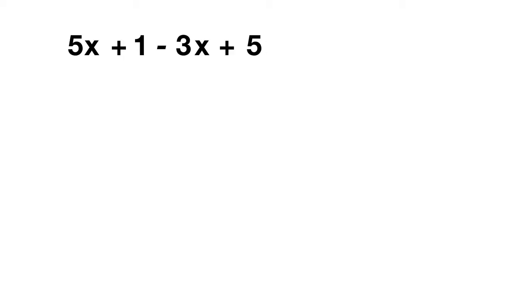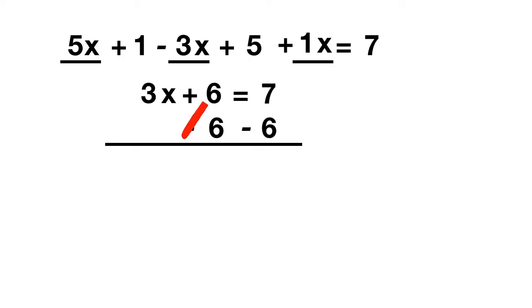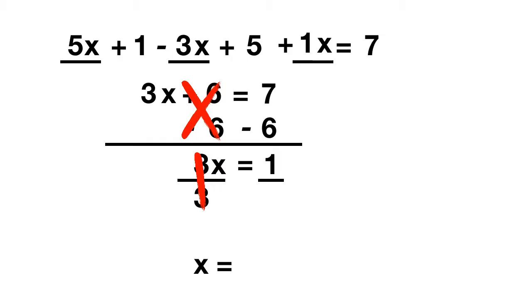Here's the last equation: 5x plus 1 minus 3x plus 5 plus 1x equals 7. Combine the x terms: 5x minus 3x plus 1x. 5 minus 3 is 2, and 2 plus 1 gives 3x. Combine plus 1 and plus 5 to get plus 6. This equals 7. Subtract 6 from both sides — 3x equals 1. Divide by 3: x is equal to 1 third.